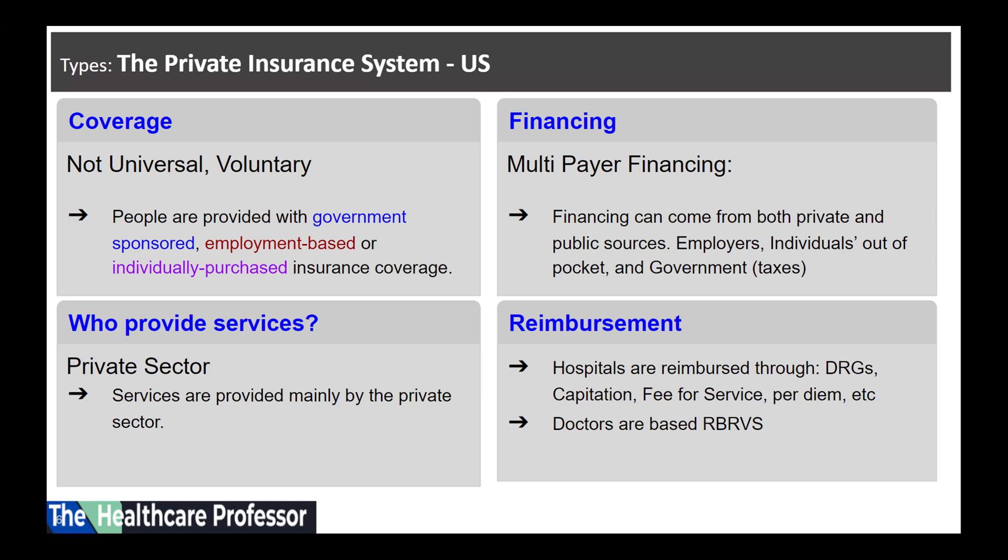Financing in the US system can come from both private and public sources: employers, individuals paying out of pocket, and the government through taxes. Services are provided mainly by the private sector. Hospitals are paid through diagnosis-related groups, capitation, fee-for-service, per diem, and other methods. Doctors are paid based on the resource-based relative value scale, also known as RBRVS.